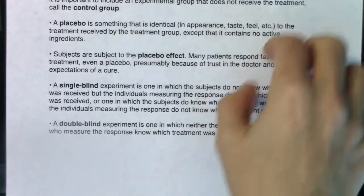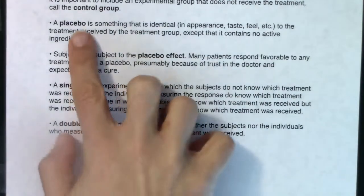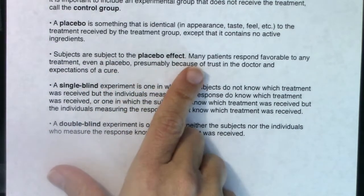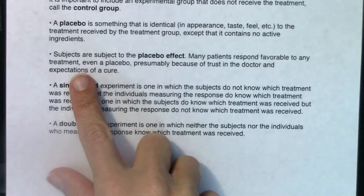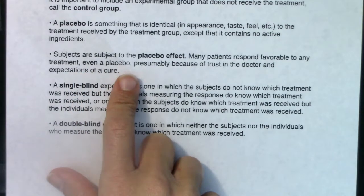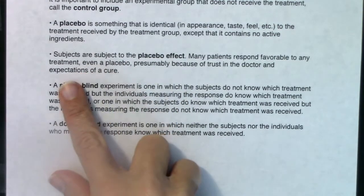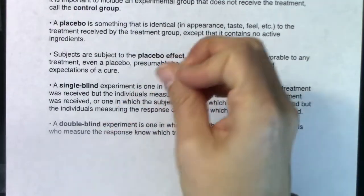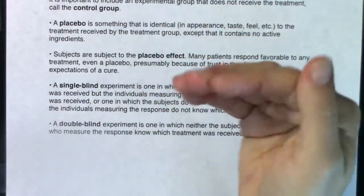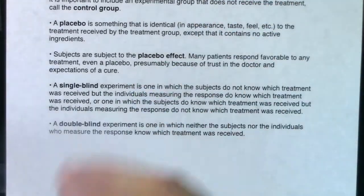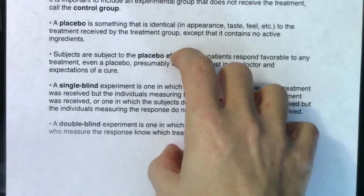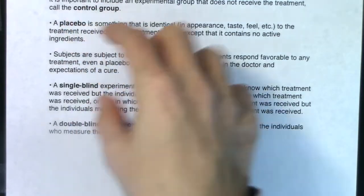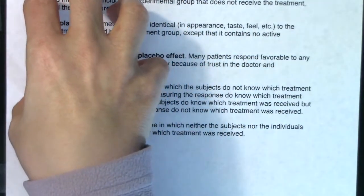Typically we give the placebo to the control group and the real treatment to the treatment group. The reason we have placebos is that humans are subject to the placebo effect — many patients respond favorably to any treatment, even a placebo, presumably because of trust in the doctor and expectations of a cure. Just by being a doctor and giving you a pill and telling you it'll make you feel better, you're actually more likely to feel better, even if it's nothing at all.